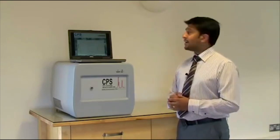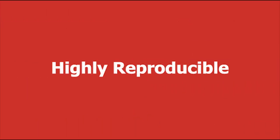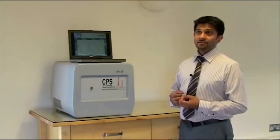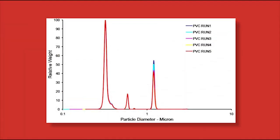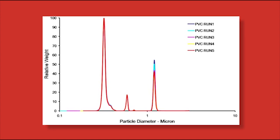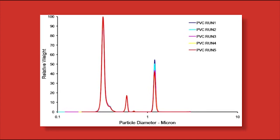The CPS technique is accurate, reliable and reproducible. In this particular example we've run a PVC sample five times, I believe on five different instruments in five different conditions. When we overlay the runs we get almost identical data. How can that be?